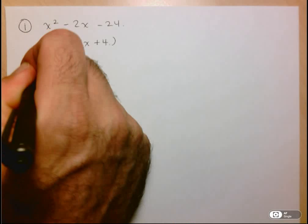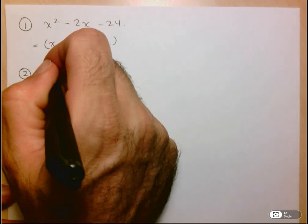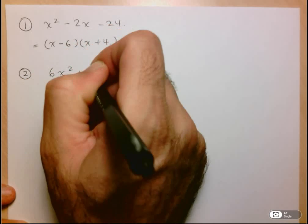We'll move on now to a trinomial where the coefficient of x squared is not equal to 1. So let's take this as an example, say 6x² + x - 2.